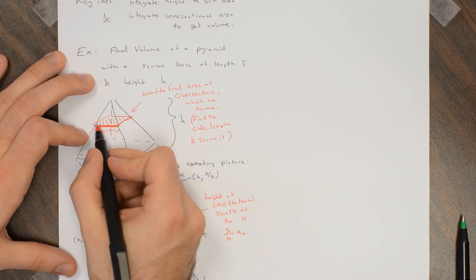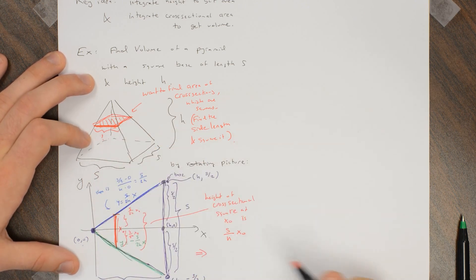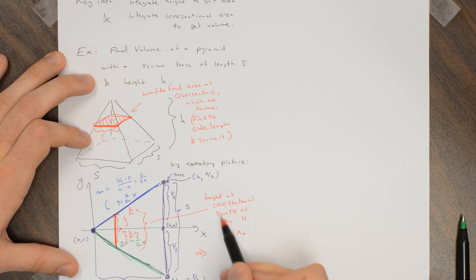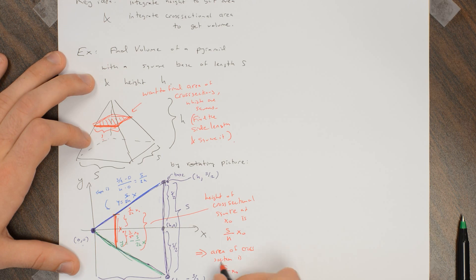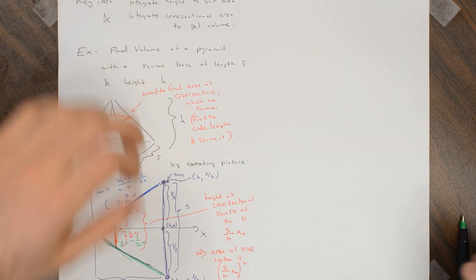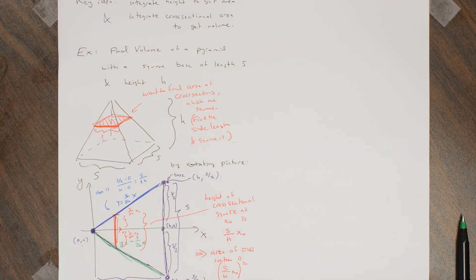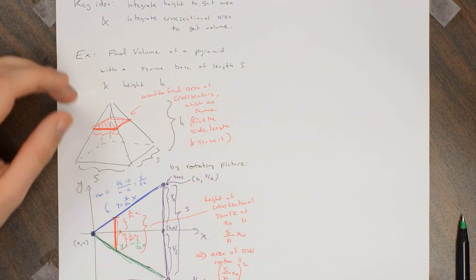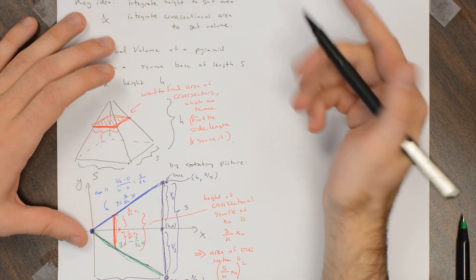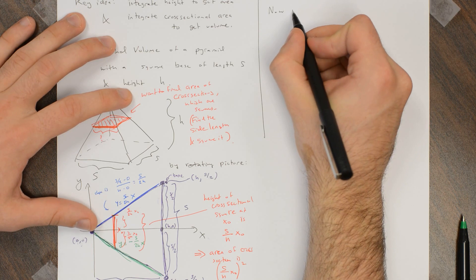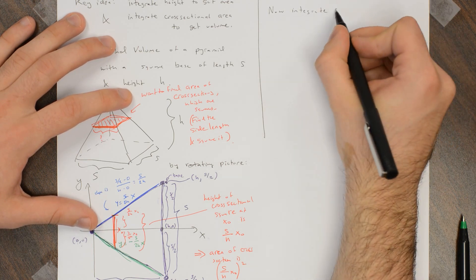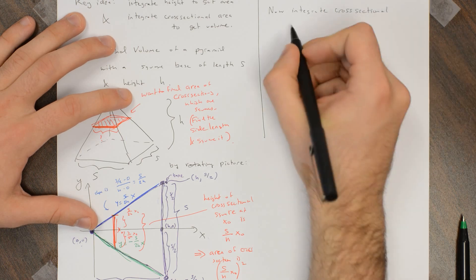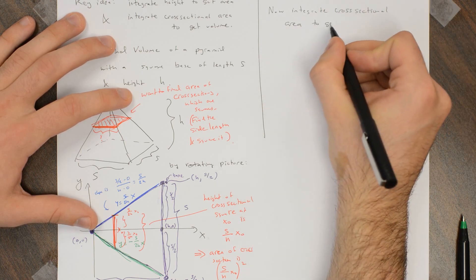So the area of the square is this squared. The area of the square is the side length squared. So the cross-sectional area is s over h times x naught, the quantity squared. So finally, we found the area of this cross-section, that if we've gone x naught units down into the pyramid, the cross-sectional area is s over h times x naught squared. Now we just need to integrate that cross-sectional area to get volume.